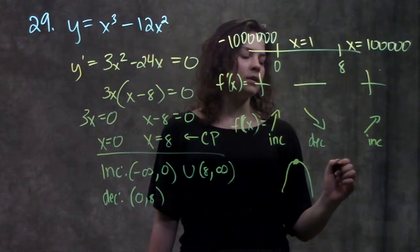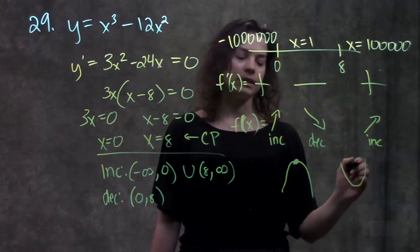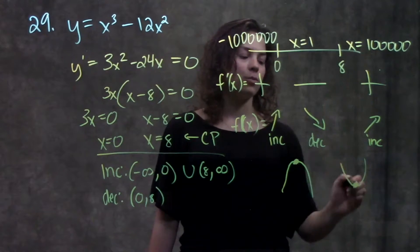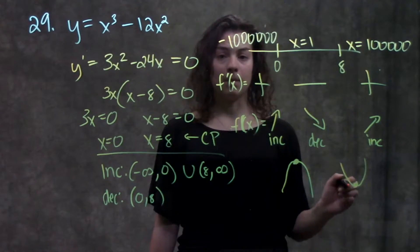Similarly, over here, since the function is going from decreasing to increasing, I know that this critical point, eight, has to be a minimum value.